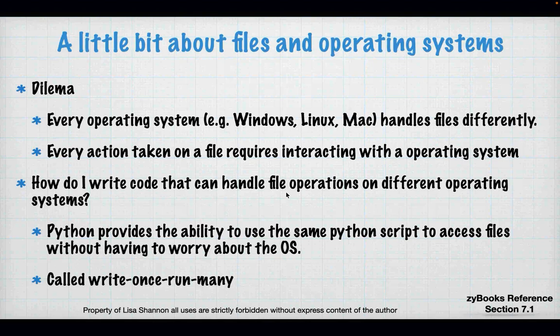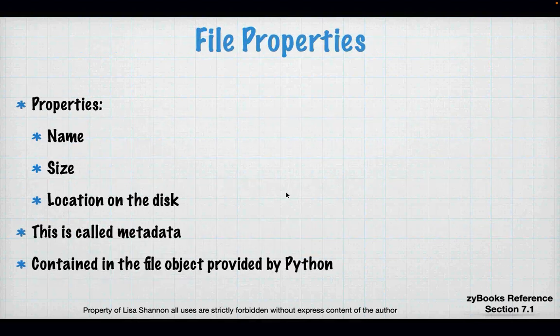It's called write once, run many. So I can use Python functionality so that if I run it on Windows, Linux, or Mac, it's all going to work the same. So what is a file? A file is two things: a series of properties, as well as the data that is inside the file. So we think of a file as maybe having text in it, but that file also has properties — name, size, and where it lives.